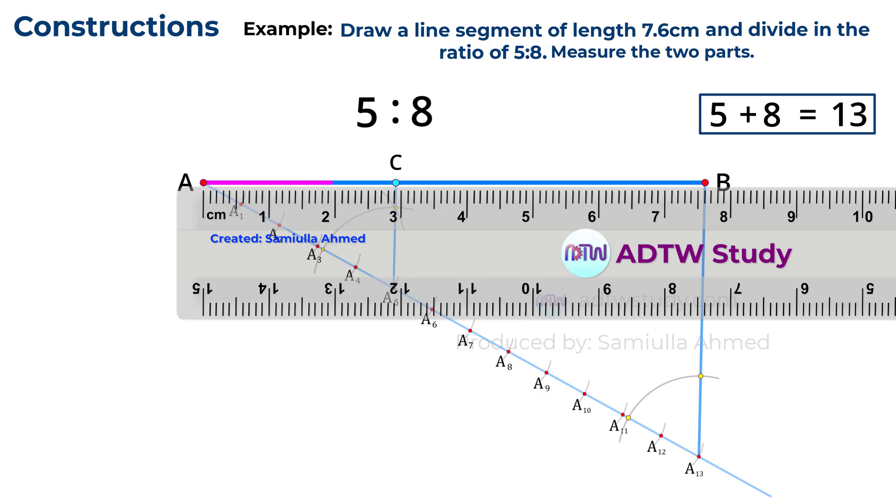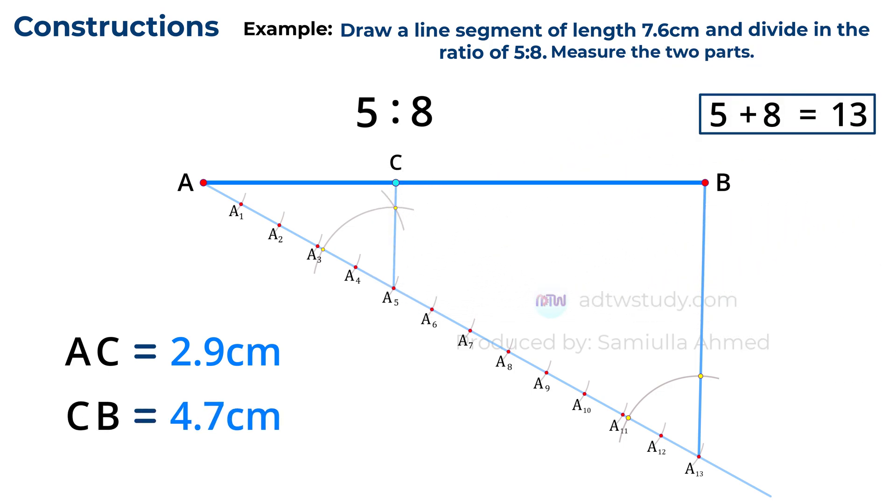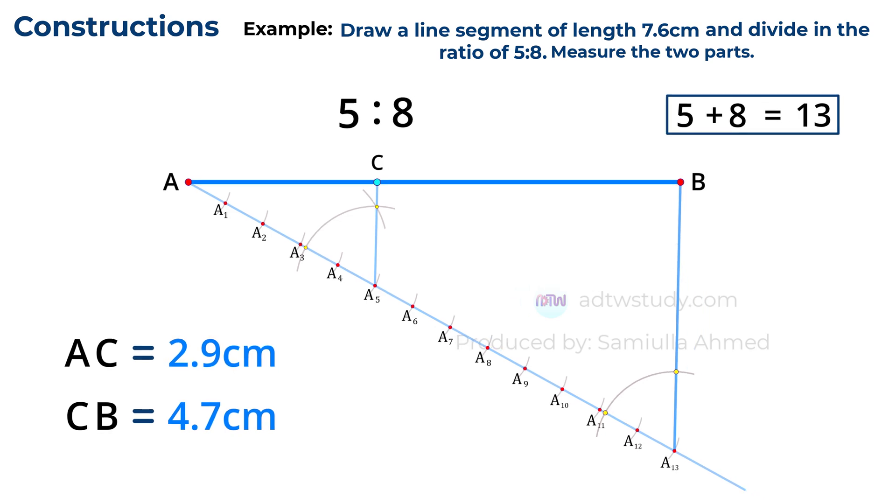The length of the line segment AC will be approximately 2.9 centimeters, while the length of the line segment CB will be around 4.7 centimeters. Keep in mind that when using a ruler these measurements might not be exact, but they are close enough for this level of accuracy. In addition to this, make sure to write the steps involved as demonstrated.